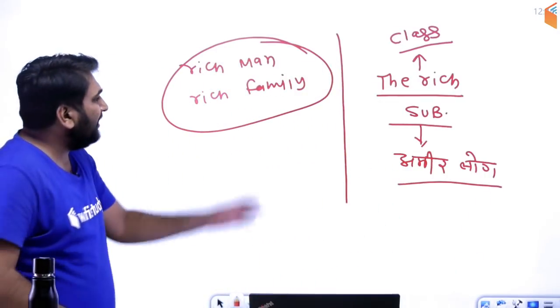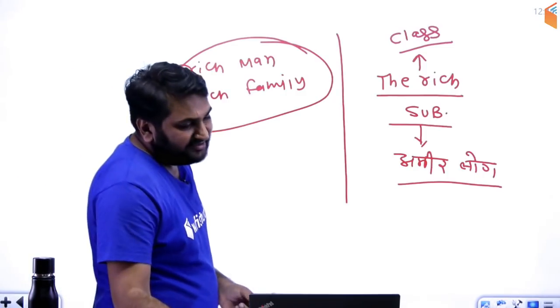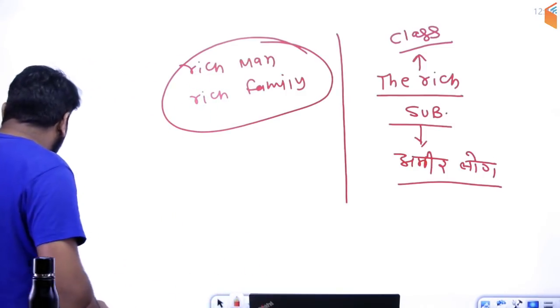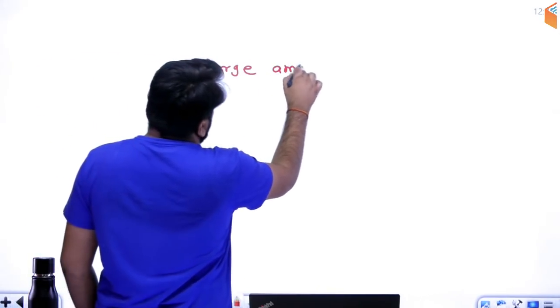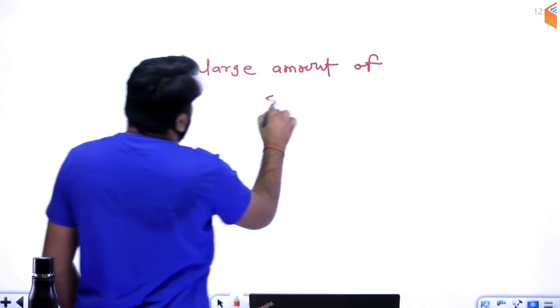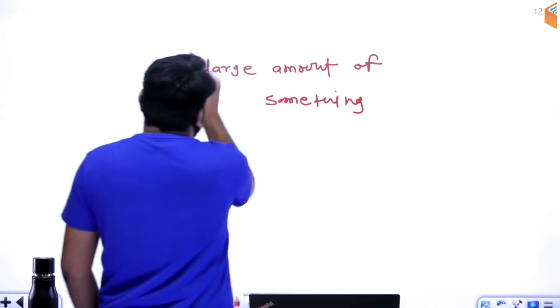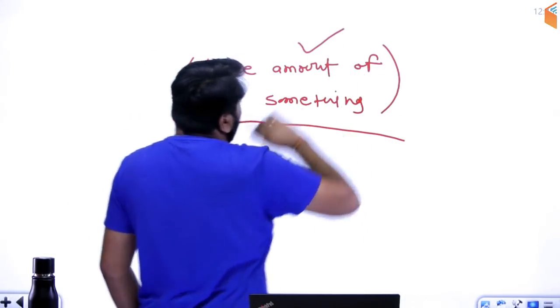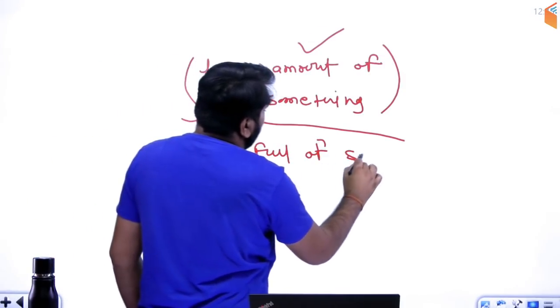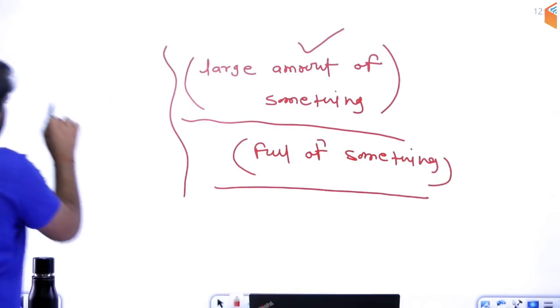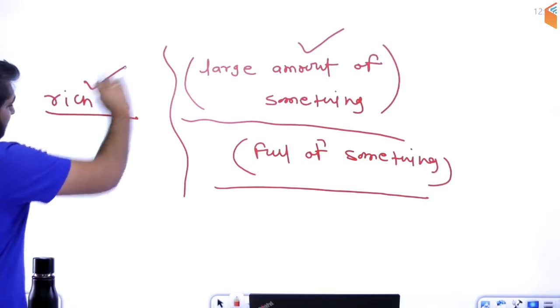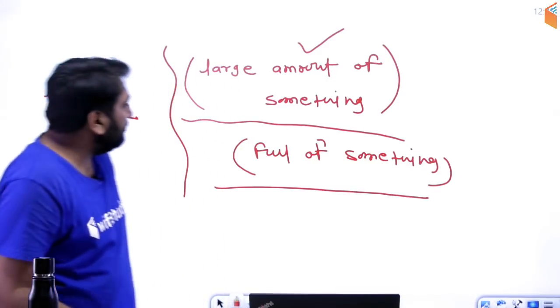Ab agar hum baat karein ki kya 'rich' word apne saath mein koi particular preposition le sakta hai? Bilkul le sakta hai. Kab? Agar humein basically kisi cheez ka large amount dikhana ho — koi cheez jo adhik maatra mein ho, large amount of something — context dekhenge, meaning dekhenge. Koi particular cheez jo hai, woh kisi cheez se poori tariqe se bhari hui hai, ya 'full of something.'